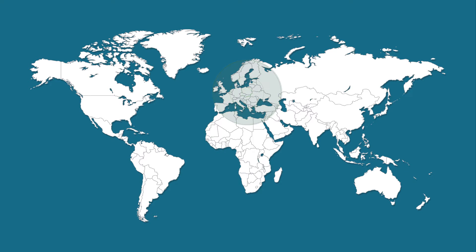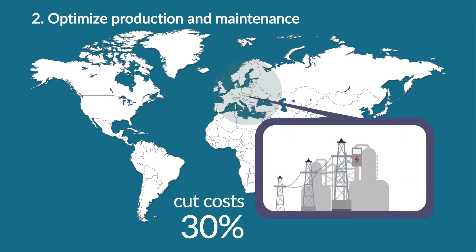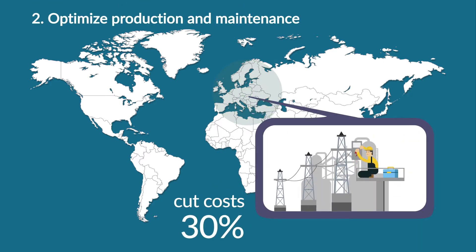A European power distribution company cut its cost 30% by changing its maintenance patterns based on insight from an AI system that monitors its power transformers.